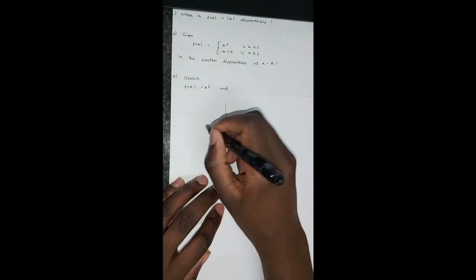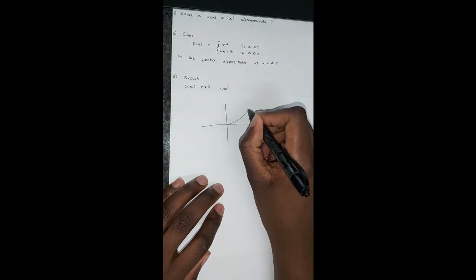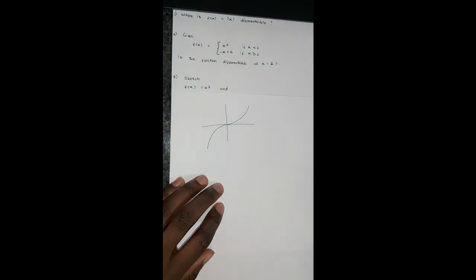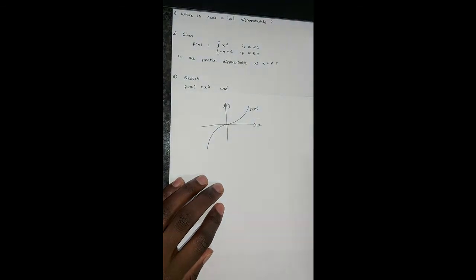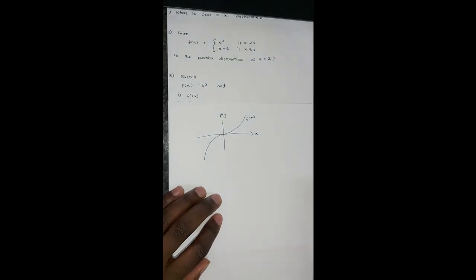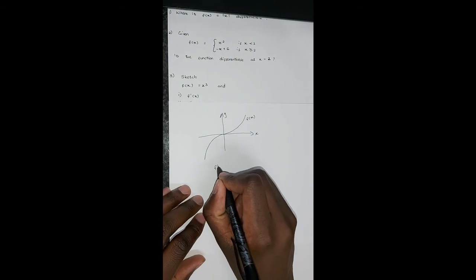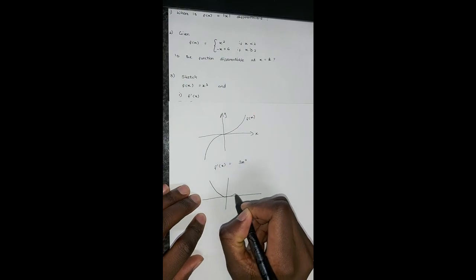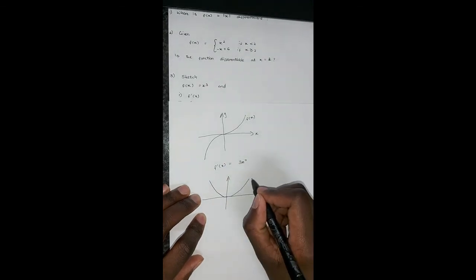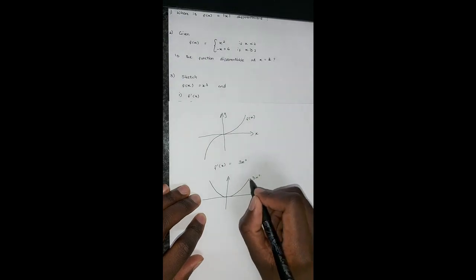The last question asks to sketch f(x) equals x cubed. That gives the standard cubic curve. Using the definition, the derivative f'(x) equals 3x squared. Sketching that gives a parabola — that is your f'(x) graph.